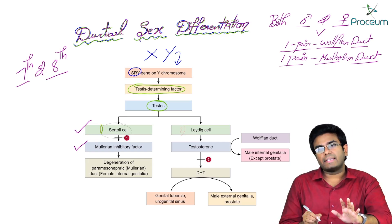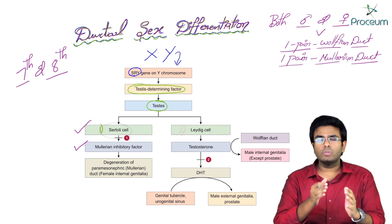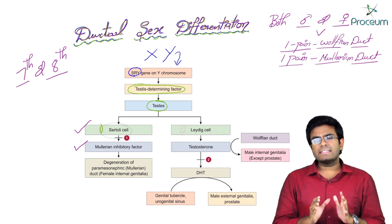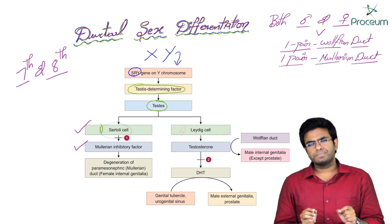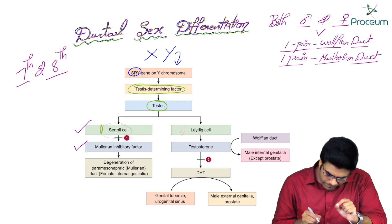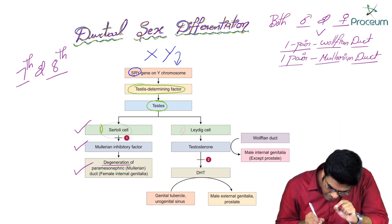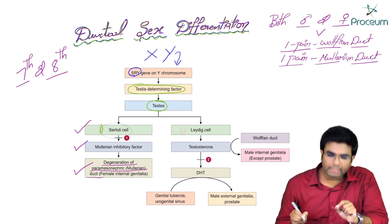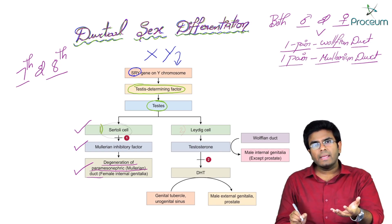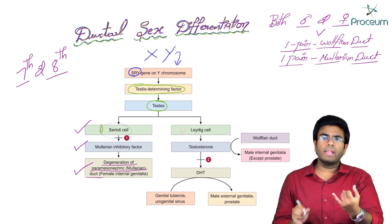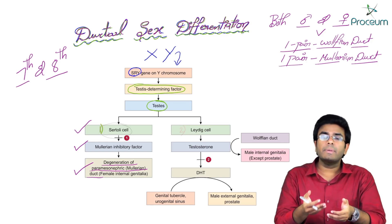This Mullerian Inhibiting Factor in a male fetus will inhibit the expression of Mullerian ducts. So why is the Mullerian duct inhibited or involuted in a male embryo? Because the Anti-Mullerian Hormone inhibits the development of the Mullerian duct, causing degeneration of the paramesonephric duct or Mullerian duct.